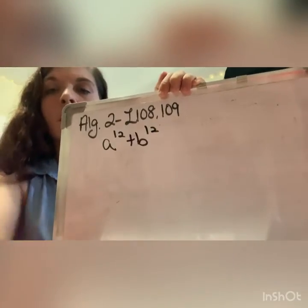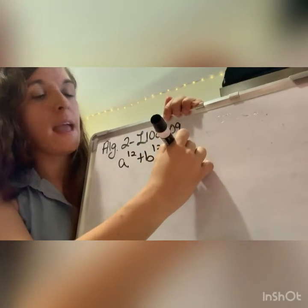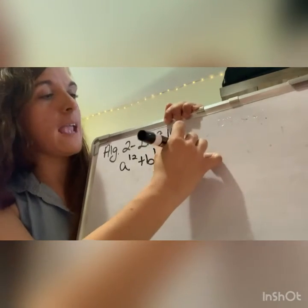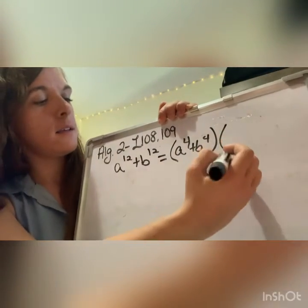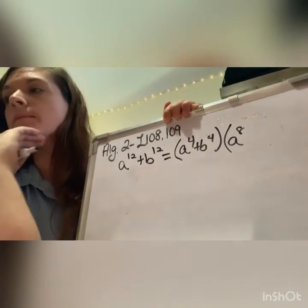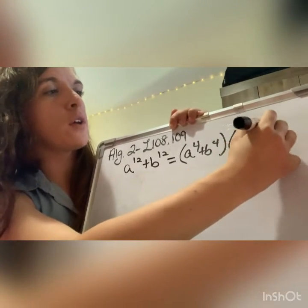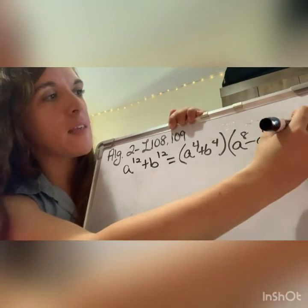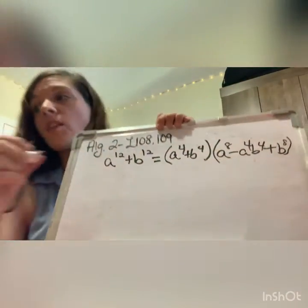Let's do example three. This is the sum of cubes again. So a plus b is going to be a to the fourth plus b to the fourth. a squared is a to the eighth, minus a times b which is a to the fourth times b to the fourth, plus b squared which is b to the eighth. That's all you do. Go ahead and try the practice, and then we'll go into Lesson 109.